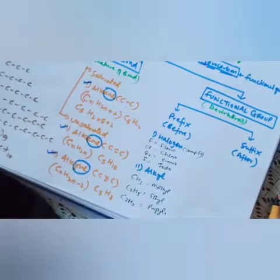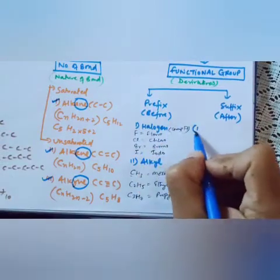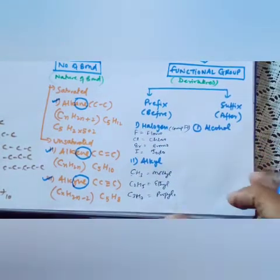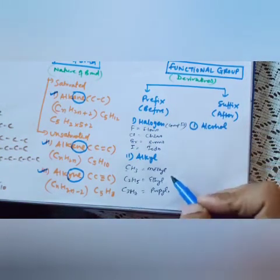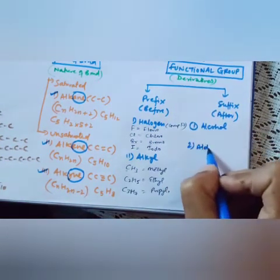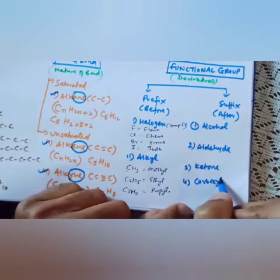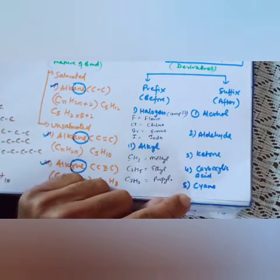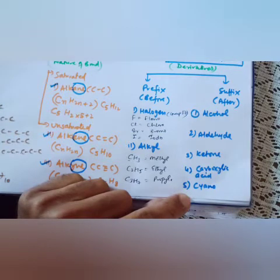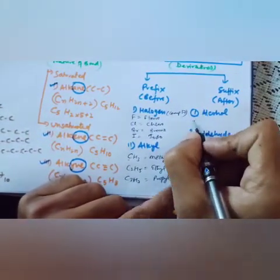Now we will talk about suffix functional groups. Dear students, listen carefully because next year you will get one full chapter on alcohol, one full chapter on aldehyde, and so on. The suffix functional groups are: first, alcohol; second, aldehyde; third, ketone; fourth, carboxylic acid; fifth, cyanide or nitrile. We also have ether and more, which we will study when those examples come.